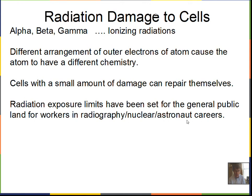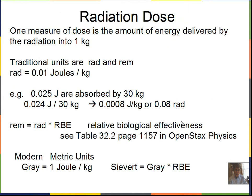Astronauts have a higher exposure limit since this is already a hazardous career — the launch, landings, and being out in space are all hazardous. Regarding radiation dose: the traditional unit is the rad, which equals 0.01 joules per kilogram. The basic structure of the dose calculation is how much energy the radiation deposits per kilogram of tissue.